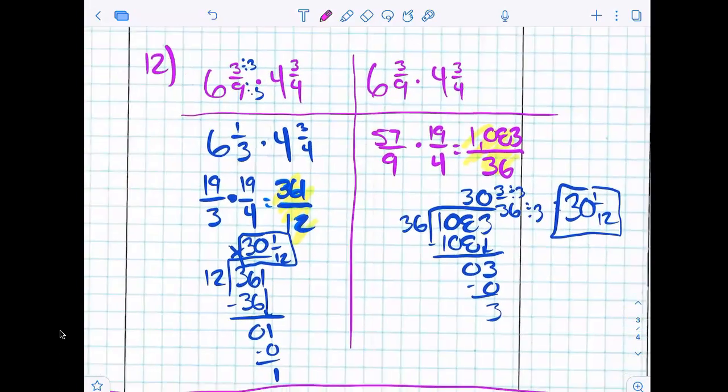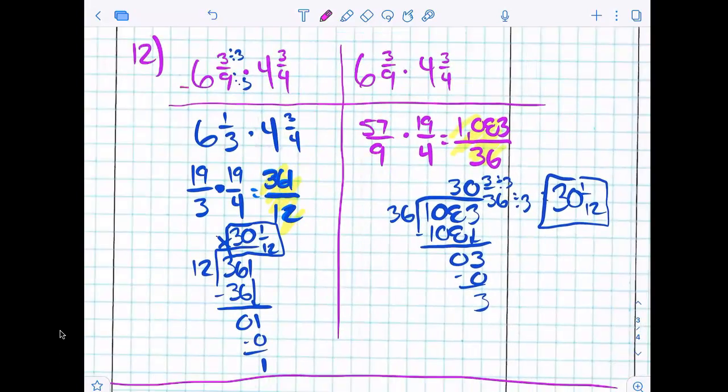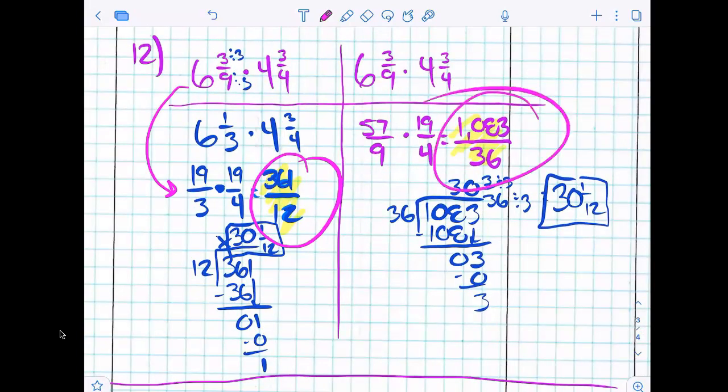And then for number 12, look at what happened on number 12. When we reduced early, we're dealing with smaller numbers like 361 and 12. When we didn't reduce until the end, we're dealing with 1,083 divided by 36. The moral of the story is we should always reduce... Reduce. Say again? Reduce first. Reduce first or reduce early, right? Yes.